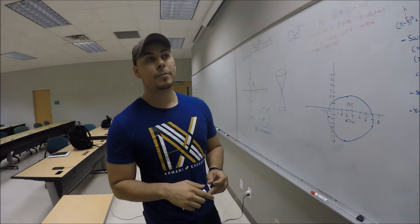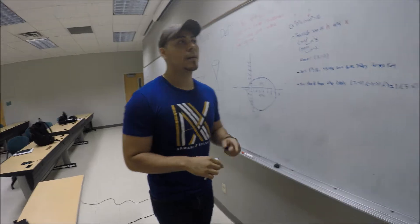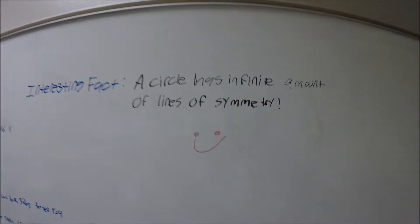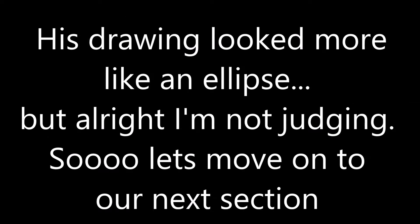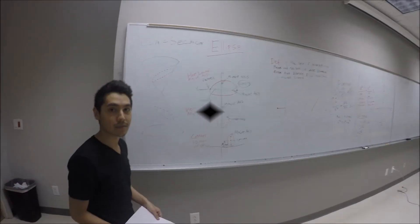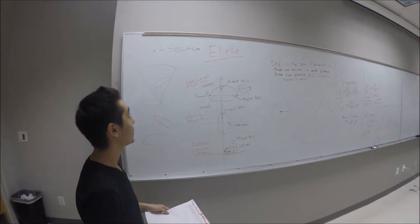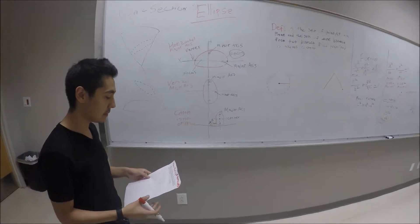My name is Juan Hernandez and we'll be talking about the conic sections. Background information: in 350 BC, while trying to solve the problem of duplicating the cube, Menaechmus observed that slicing a cone with a plane not parallel to its base will create certain curves, depending upon the angle at which the plane passed through the cone.